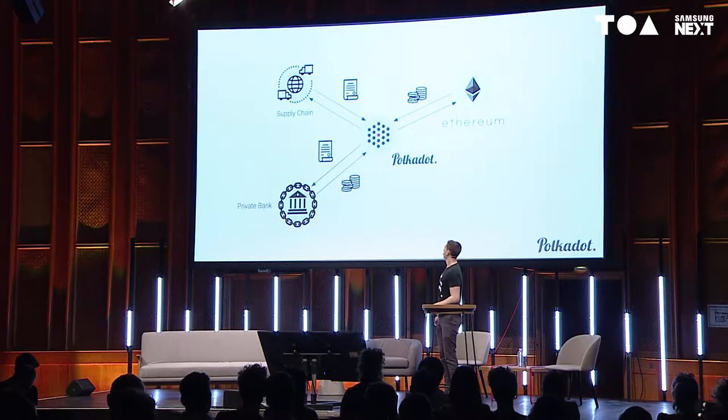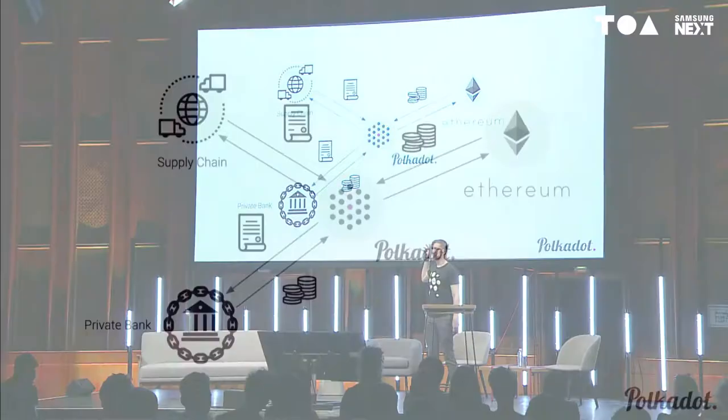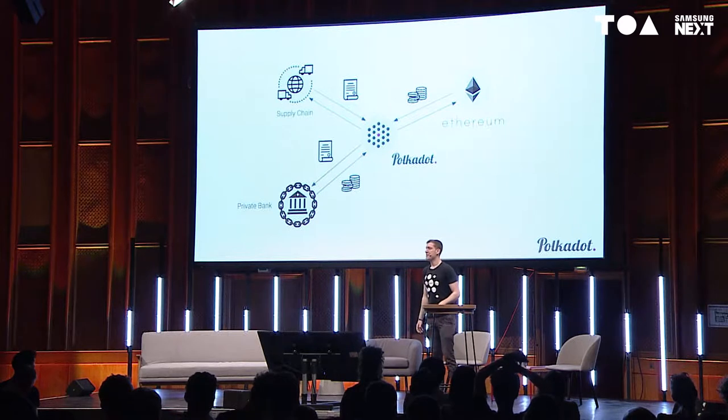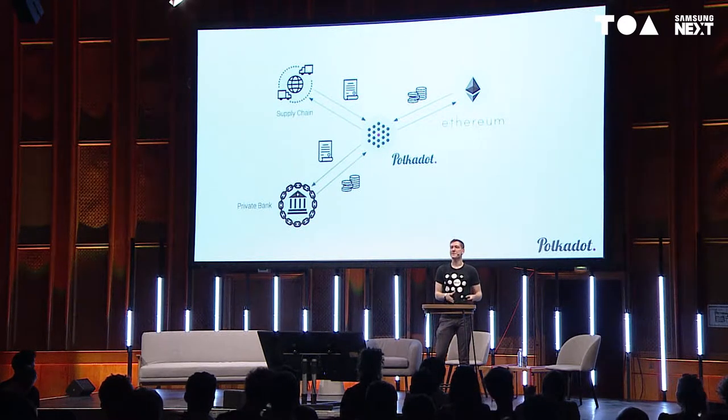One thing that would be possible with an interoperable system: we have the Polkadot interoperability chain at the center, a private chain managed by a bank coordinating account balances, the Ethereum public chain, and a supply chain focused on that specific use case. All of these could communicate and send messages between themselves — a smart contract on Ethereum, completely permissionless and decentralized, could query a private bank for a balance and communicate with the supply chain to determine provenance.